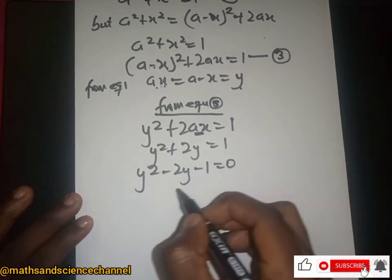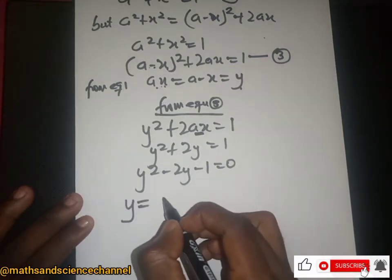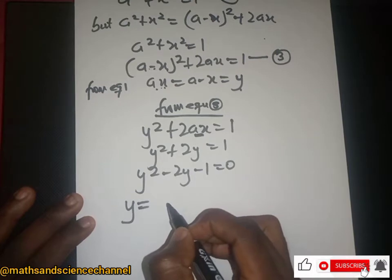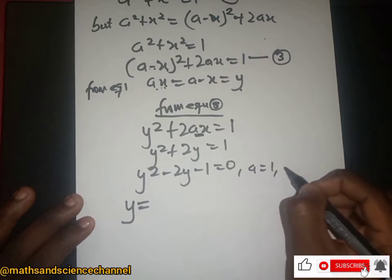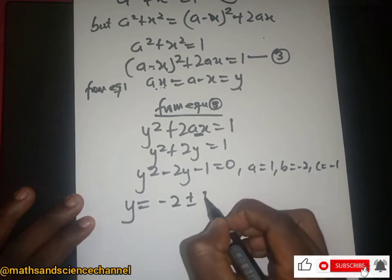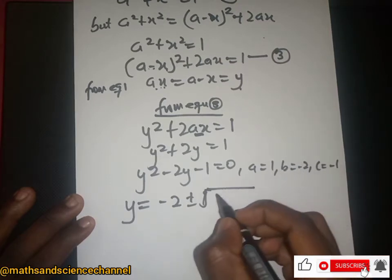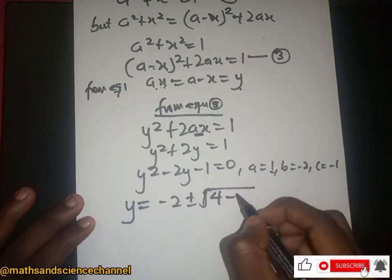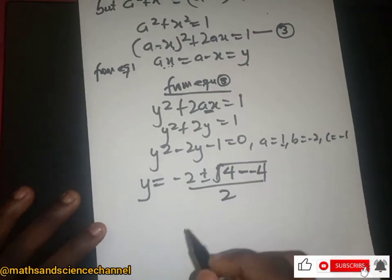Using the quadratic formula, y equals negative b plus or minus square root of (b squared minus 4ac), divided by 2a. In this case a is 1, b is negative 2, and c is negative 1. So we get negative 2 plus or minus the square root of: b squared is (−2)² = 4, minus 4 times a times c which is negative 1, divided by 2a which is 2.